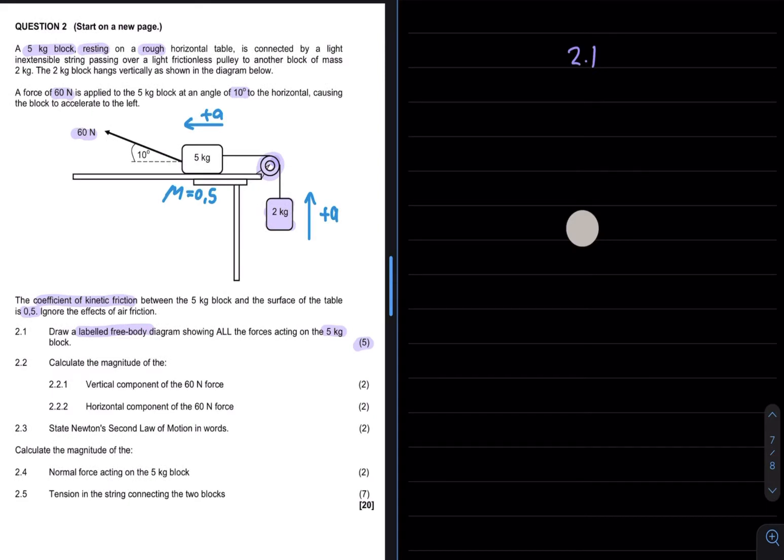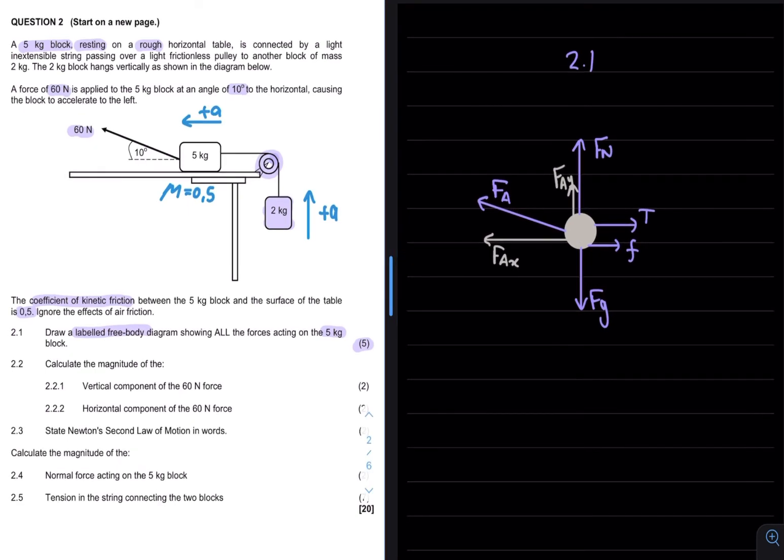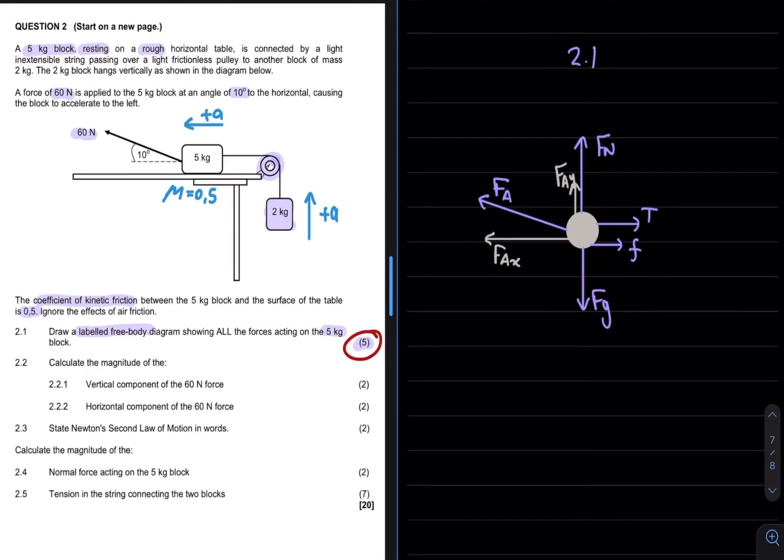Now remember for the free body diagrams we will always draw the dot with the vectors showing outward. Now this 5kg block has a normal force, gravity, tension, friction and the force applied. We can also go and draw the components of the applied force in pencil. Now seeing that this is a 5 mark allocation we need to draw five vectors in total.